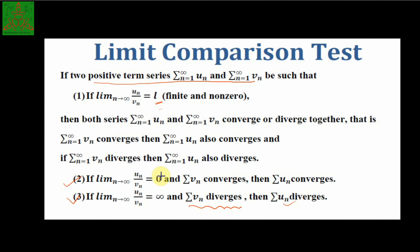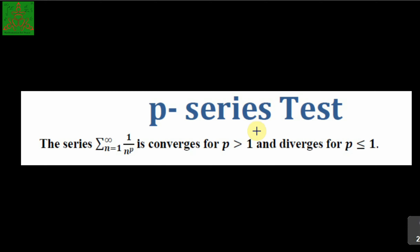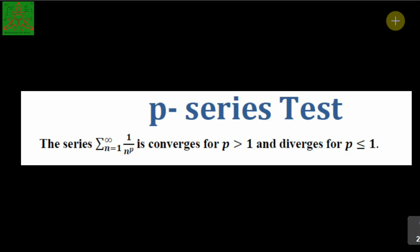The proof of the limit comparison test is also available via the i-button. Next is the p-series test, which states that the summation of 1/n^p is convergent for all values of p greater than one, and divergent for all values less than or equal to one. The proof for the p-series test is also available via the i-button.